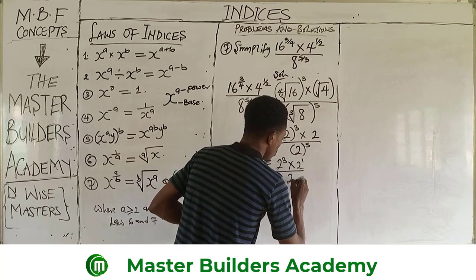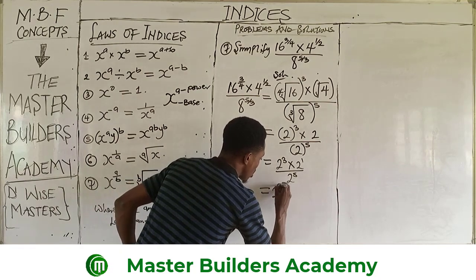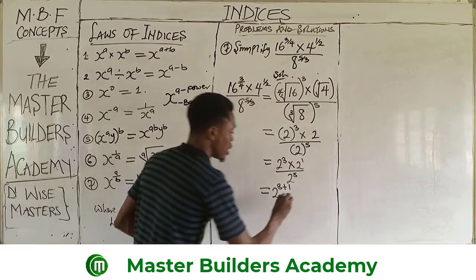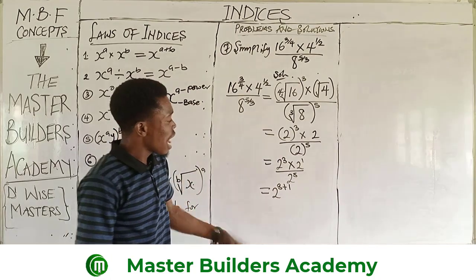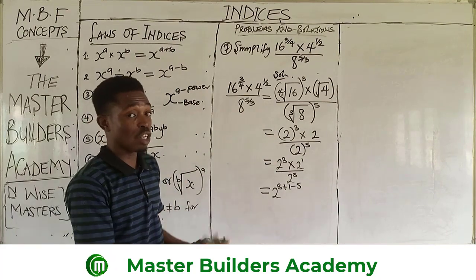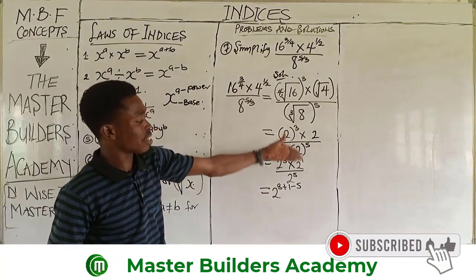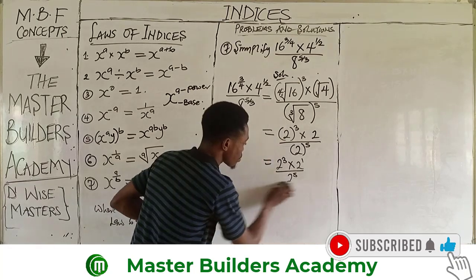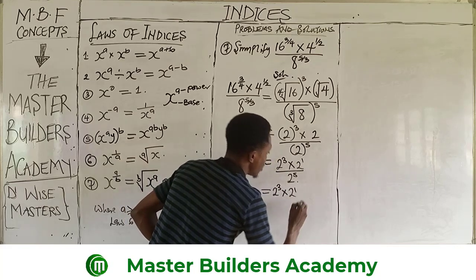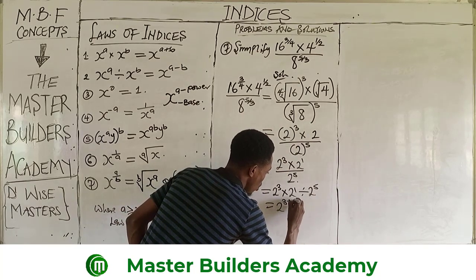This gives us 2 raised to the power of 3, multiplied by 2 raised to the power of 1, all over 2 raised to the power of 5. Applying the laws of indices: the relationship between the numerator terms is multiplication, so we add the powers with one base. This can be reinterpreted as 2^3 × 2^1 ÷ 2^5, giving us 2 raised to the power of 3 plus 1 minus 5 using the first and second laws of indices.